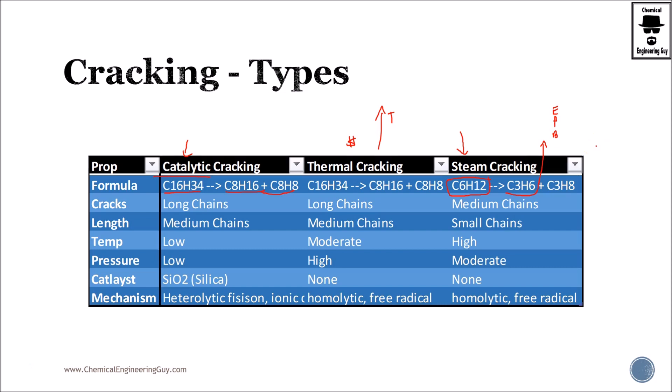So what do we crack? In catalytic cracking, we tend to crack long chains. Thermal cracking, similar. In steam cracking, medium chains because we want to produce small chains. In the catalytic cracking, we want long chains to convert to medium chains, especially for gasoline and other fuels. The same is true for thermal cracking.